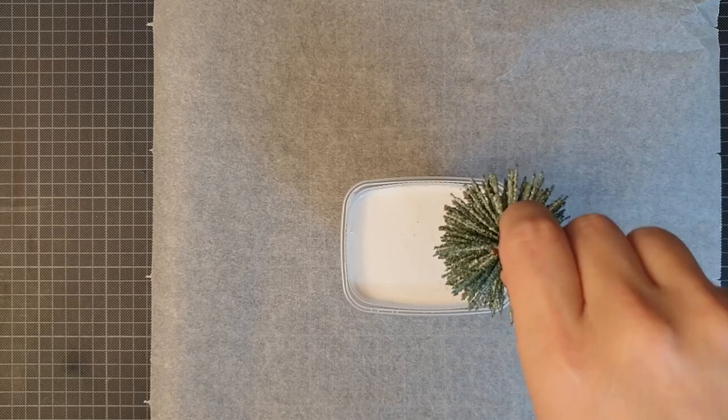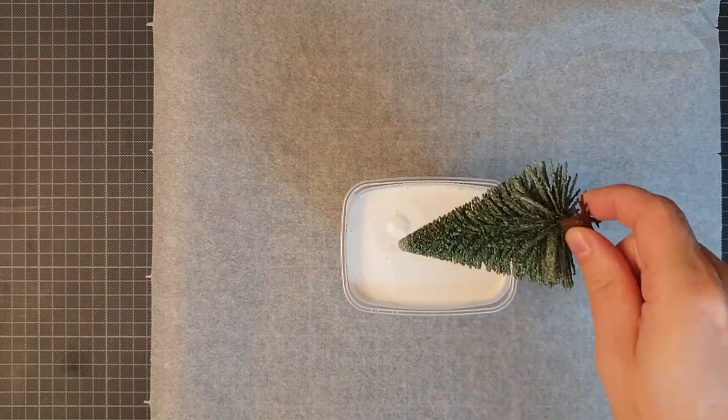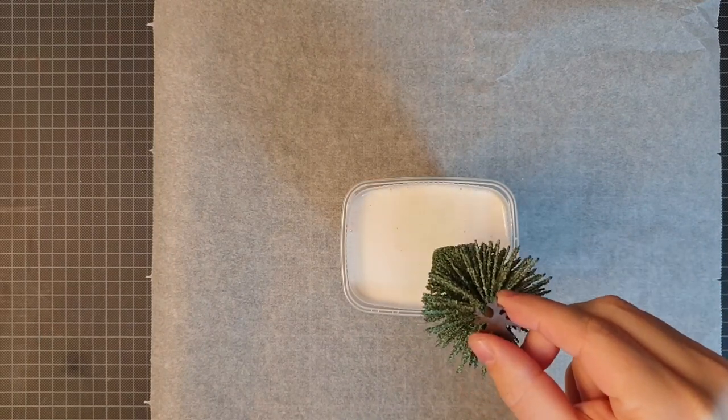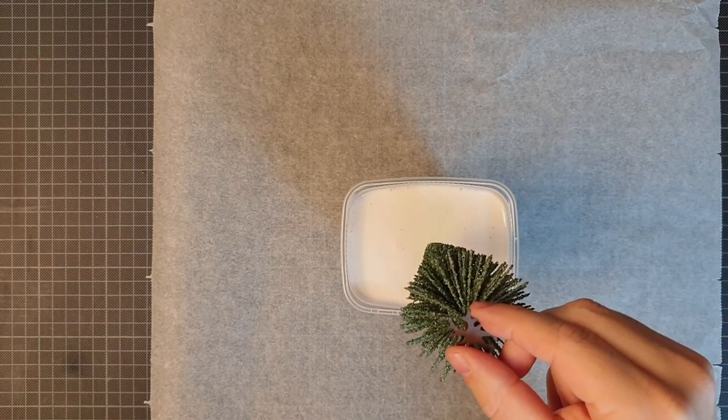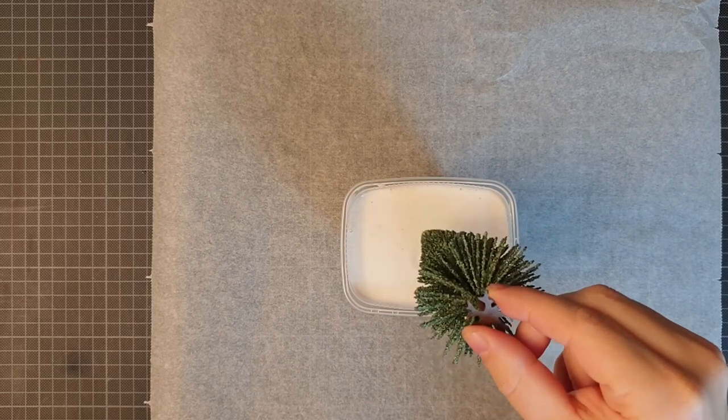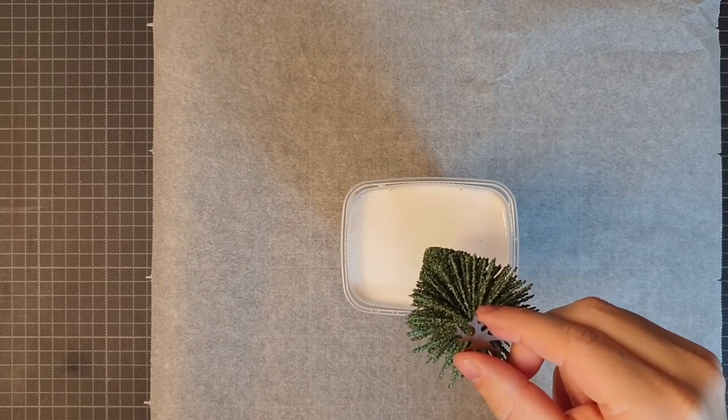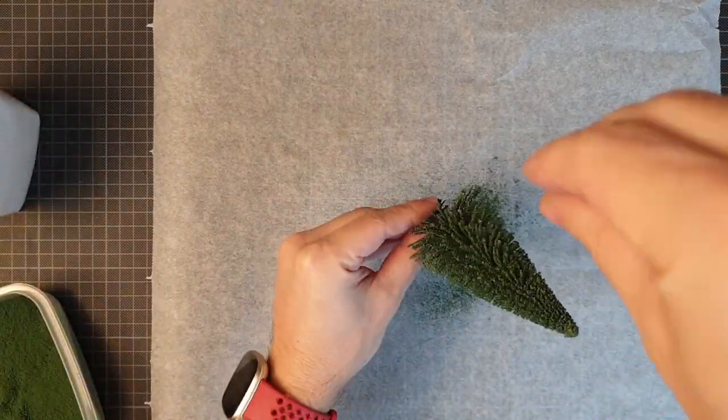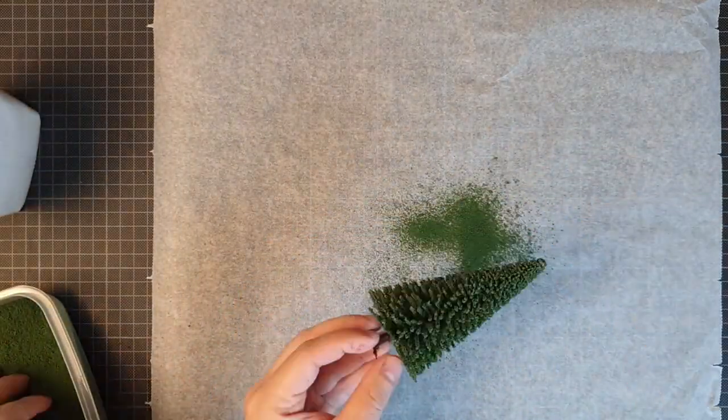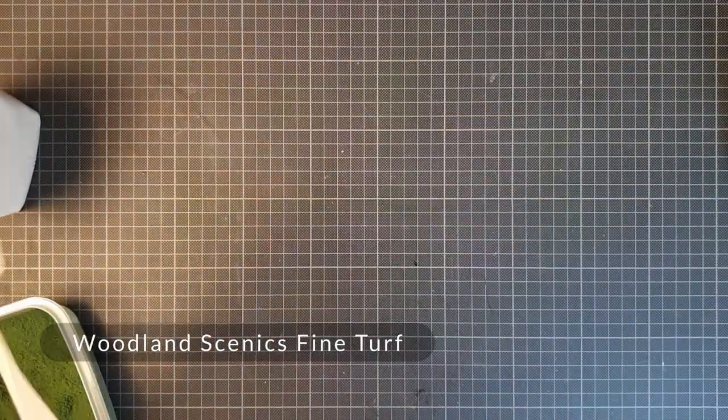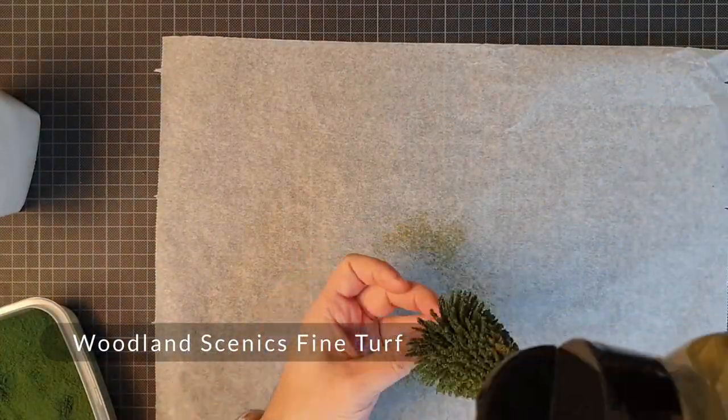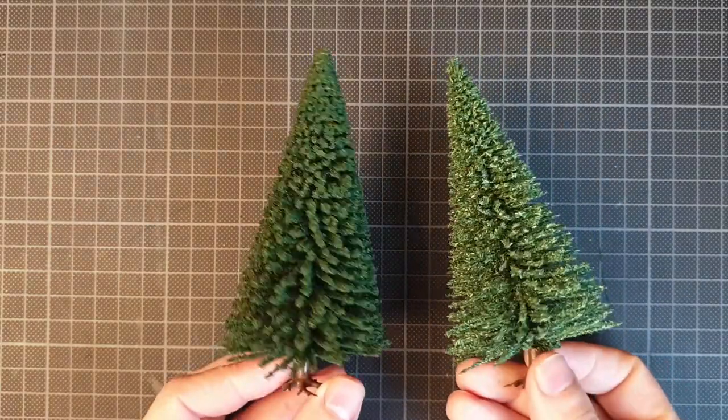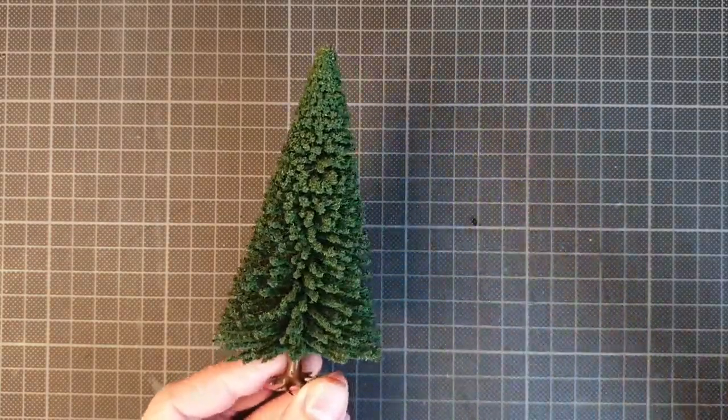Right, we need a Christmas tree. I had one of these weedy wire trees that I wanted to bulk up, so I dipped it in a mix of PVA glue and water at a ratio around 1 to 4, I think. I also added a few drops of washing up liquid to reduce the surface tension. I let the glue run off the tree for a few minutes and then I sprinkle it with foam flock from Woodland Scenics and let it dry. Here it is next to an untreated tree. I think it looks much nicer now.